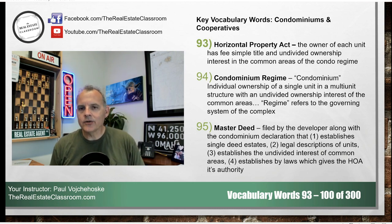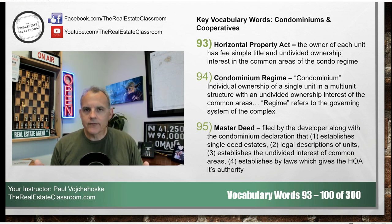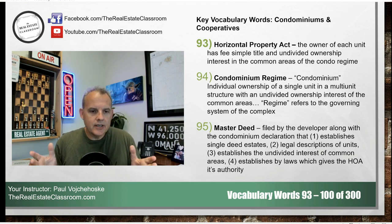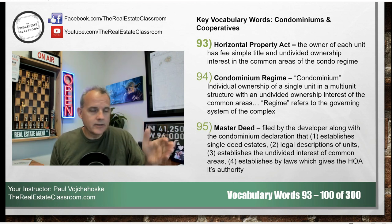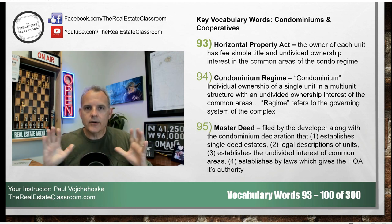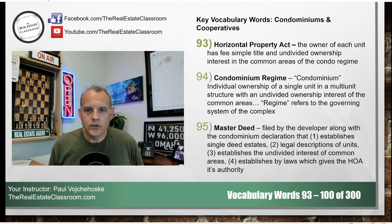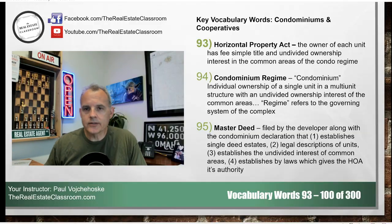That also allows for undivided ownership in the common areas of the rest of the condominium regime. A condo regime looks almost like an apartment community — you have individual units, and each one of those individual units is owned fee simple by the individual owner, but they also have an undivided interest in the common areas, like swimming pool areas and those type of things.